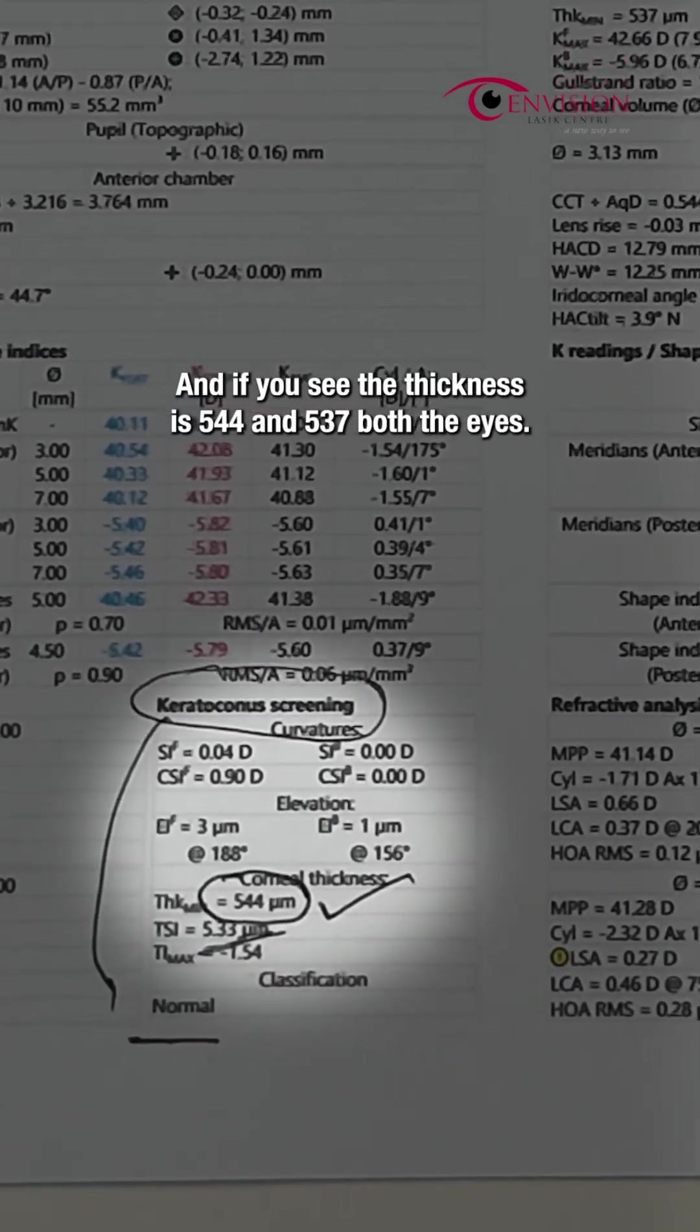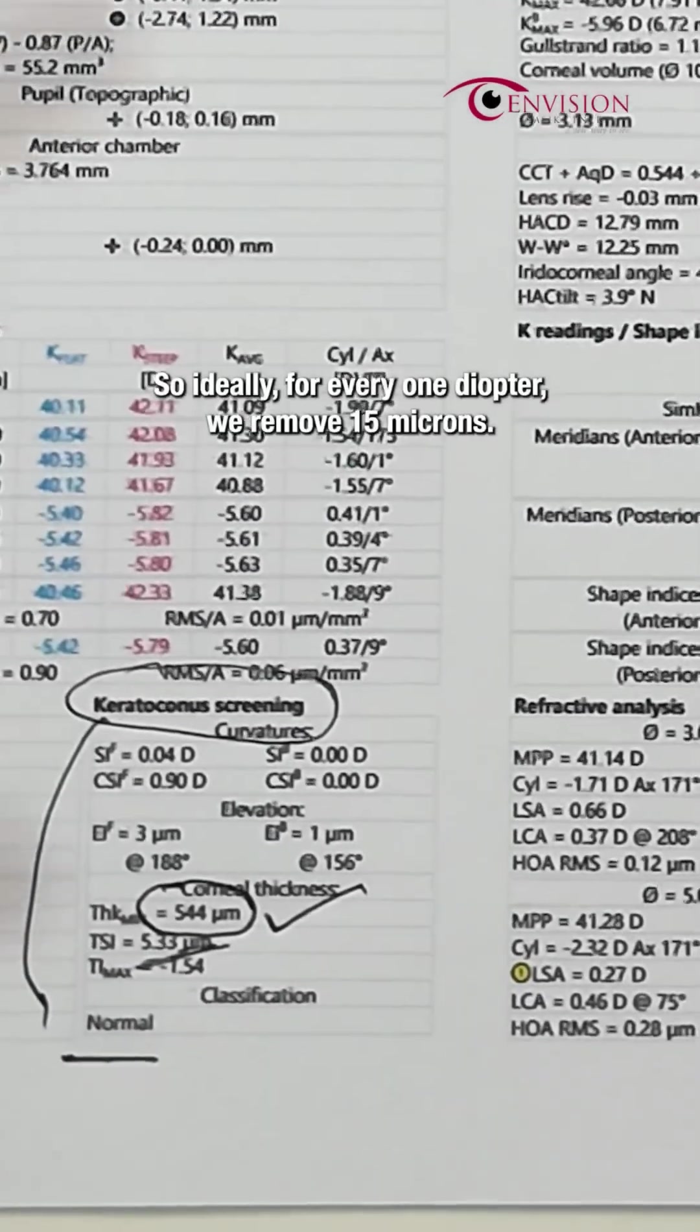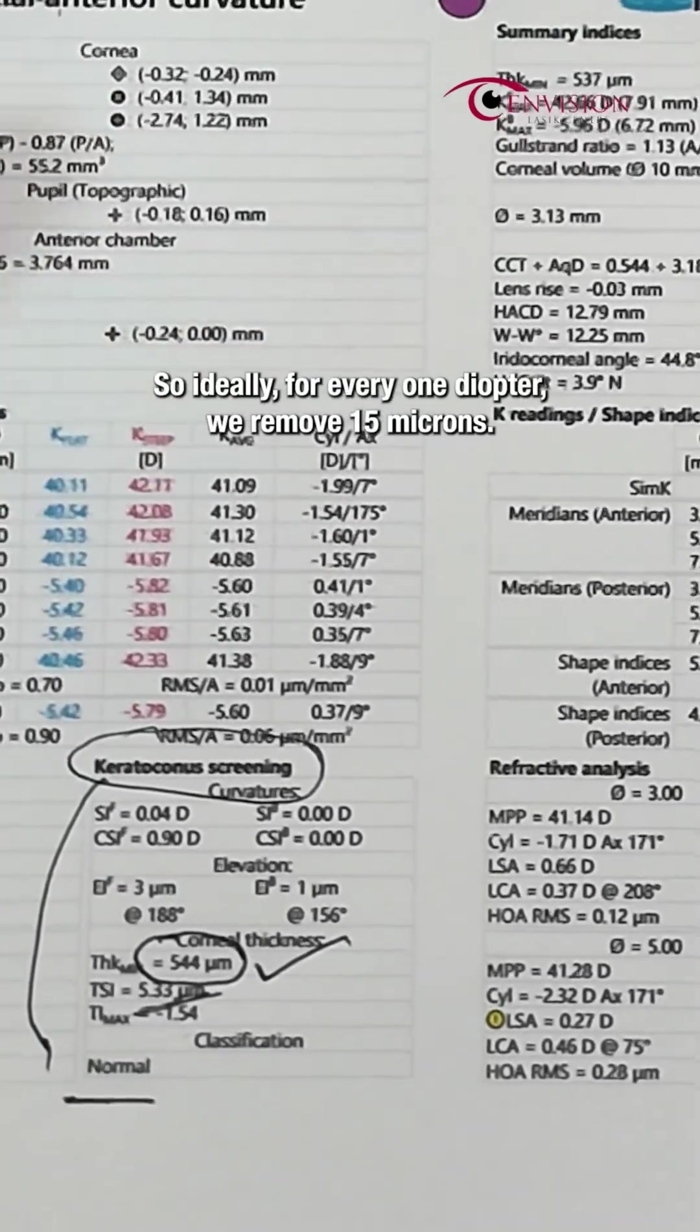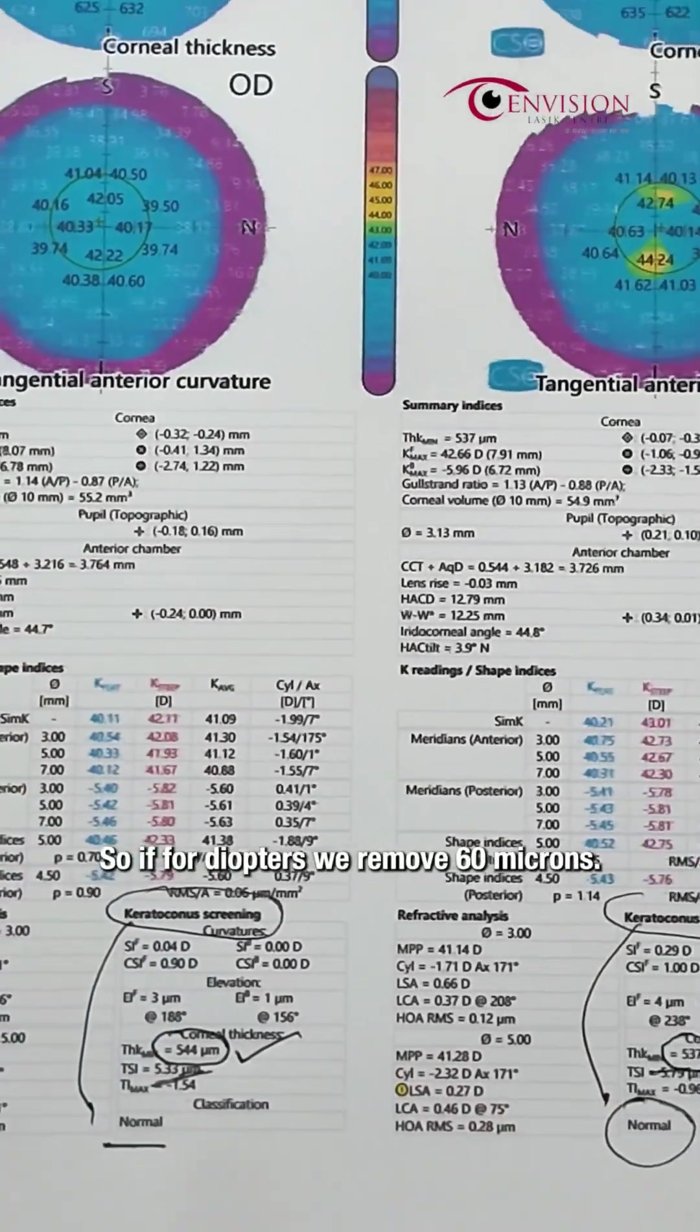And if you see, the thickness is 544 and 537 in both eyes. So ideally, for every one diopter, we remove 15 microns. So for four diopters, we remove 60 microns.